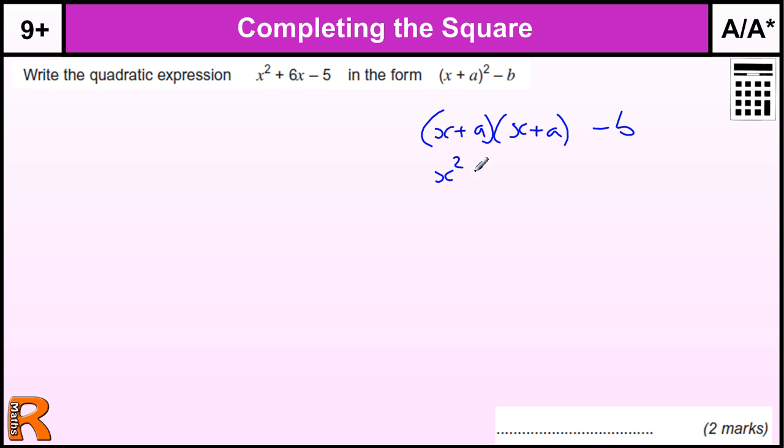Then we end up with x squared, we've got A times x, and we've got x times A, which is 2Ax. Then we've got A times A, which is A squared. And then we've got the minus B that's on the outside. So what we have here, the x squared is fairly straightforward, that's going to stay the same.